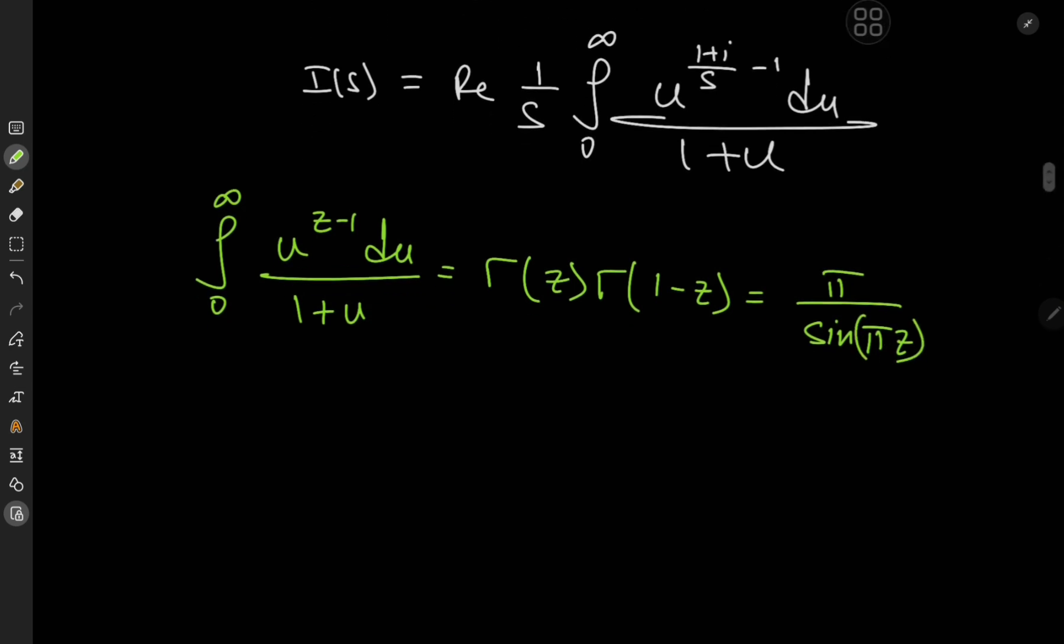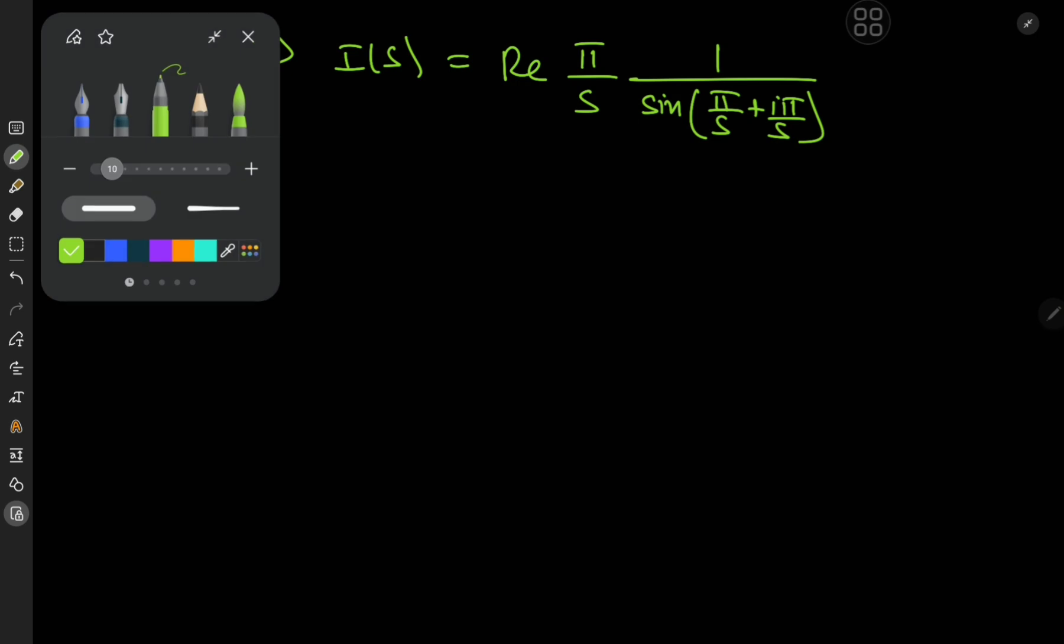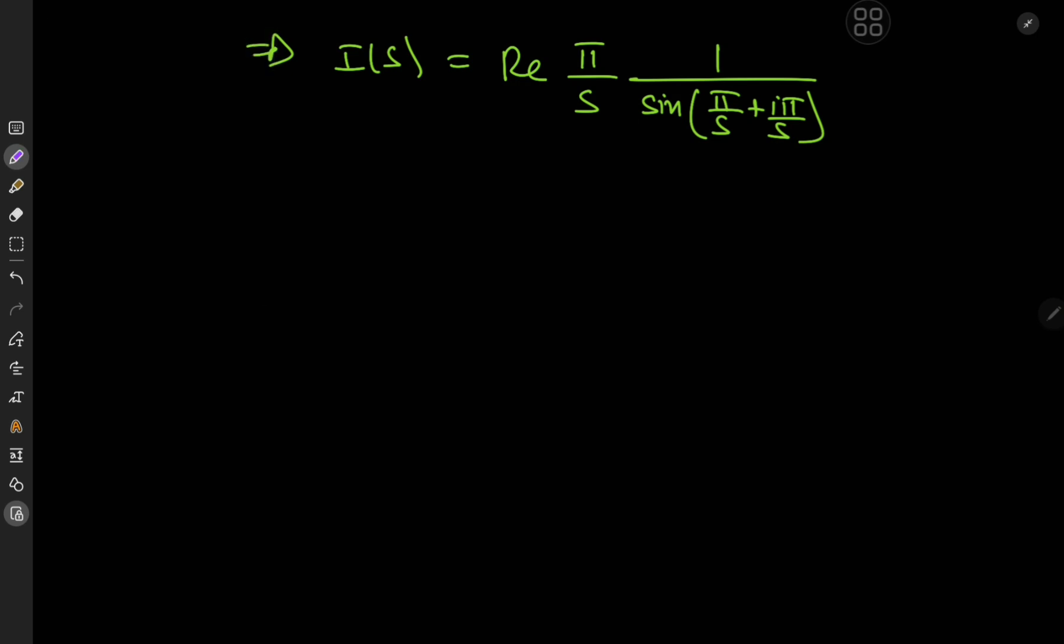And in our case, we have z here equal to 1 plus i by s. So this implies that i of s here equals the real part of pi by s times 1 by sine of pi by s plus i times pi by s. Now let's expand the sine function in the denominator to get a closer look into the real and imaginary parts we have.